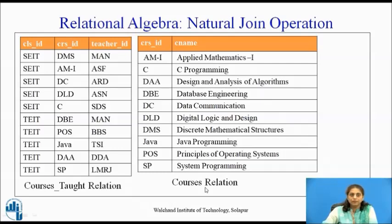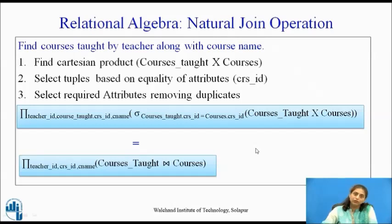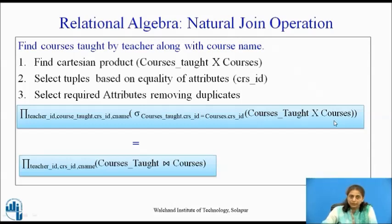Consider the courses_taught relation with attributes class_id, course_id, and teacher_id, and the courses relation with attributes course_id and course_name. To find the courses taught by a teacher along with the course name, we perform the Cartesian product, then select on the equality of the common attribute course_id, then project the desired attributes — this is equivalent to performing courses_taught natural join courses.